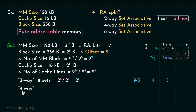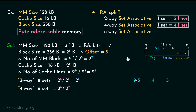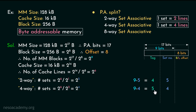In case of 4-way, the number of sets is found by dividing the number of cache lines by the set size, which in case of 4-way is 4 because every set is going to have 4 lines. So we divide by 2 squared, which gives us 2 to the power 4. Therefore for the set number, 4 bits will be used, and for tags 5 bits will be used because 9 minus 4 is 5. Therefore for a 4-way set associative cache the physical address split will have 5 tag bits, 4 set number bits, and 8 bits of block or line offset.